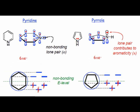Using frost circles of these two compounds, along with the fact that they both contain six pi electrons, we can see that pyridine and pyrrole are both aromatic.